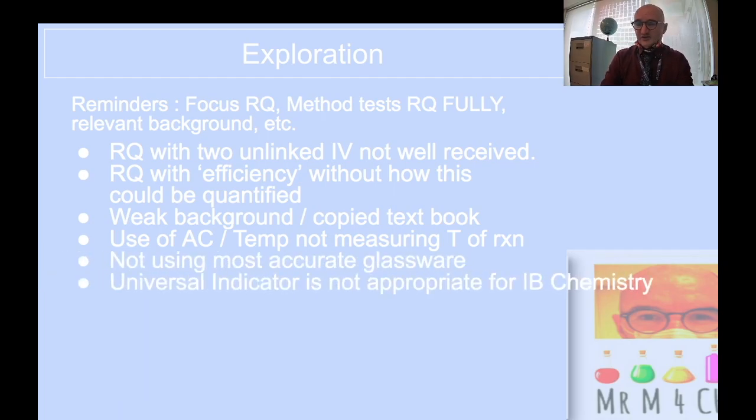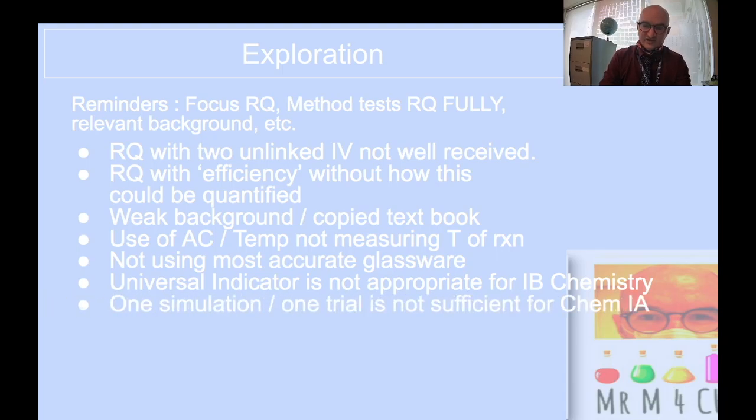But do we need another full page of this when you could have put something beyond what you actually knew to increase your exploration mark and probably personal engagement as well? So big chunks of text. Avoid that. I've already mentioned the use of AC to control the temperature. It doesn't. Students making solutions that are going to be used in calculations using an Erlenmeyer flask or a squat beaker rather than a volumetric flask. There's far too much of that. And universal indicator is never, ever appropriate for IB chemistry. Just don't use it.